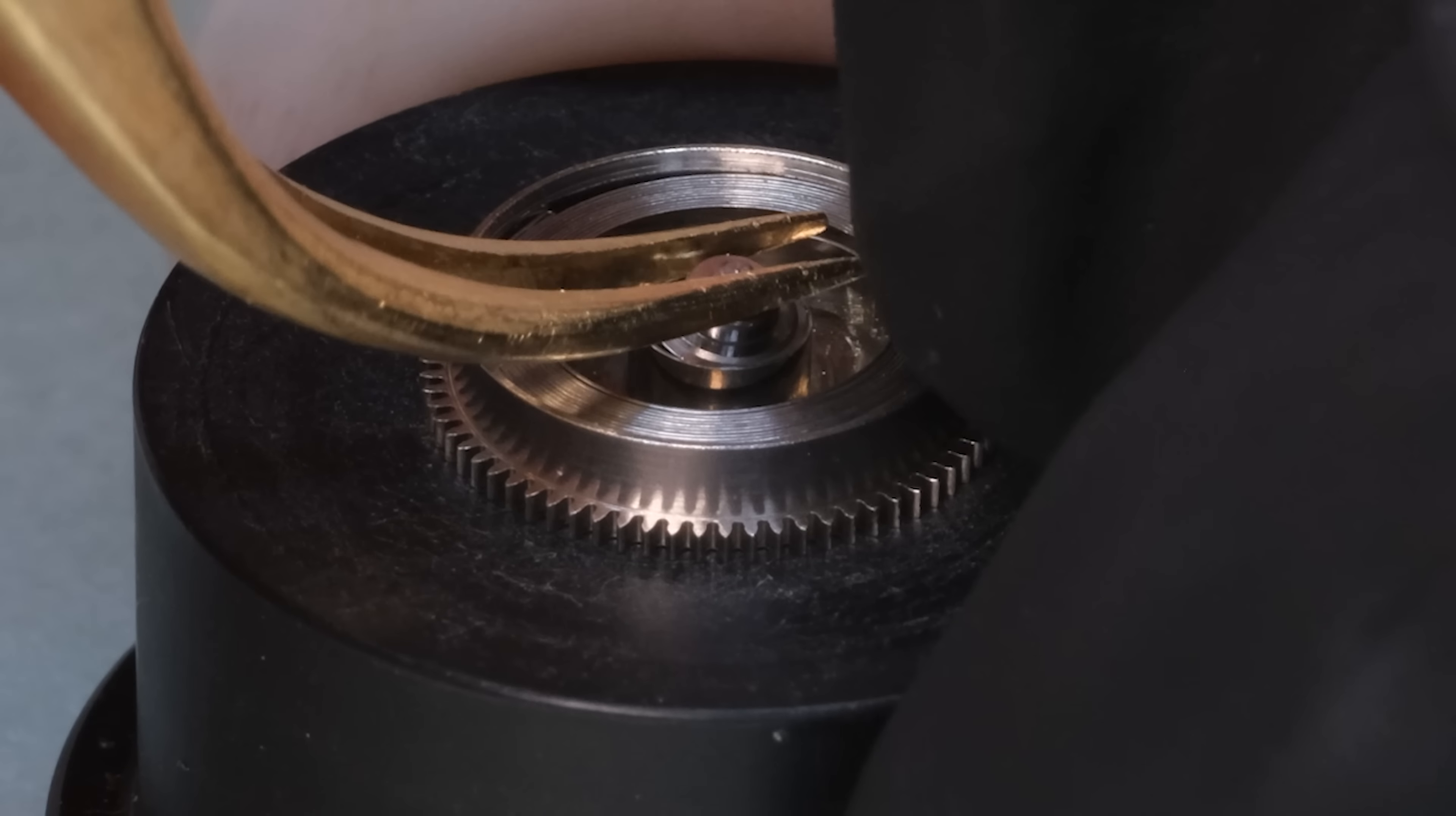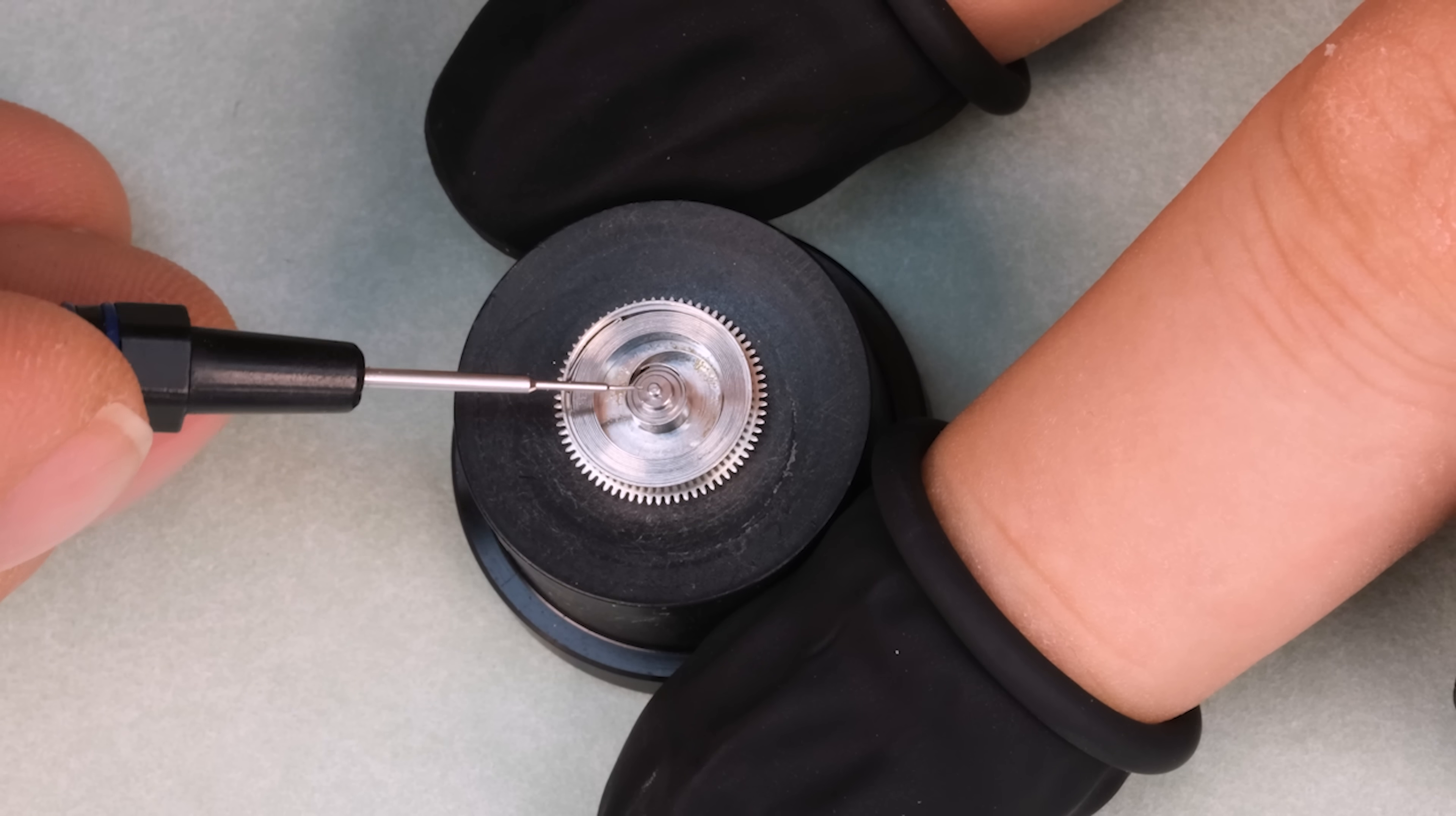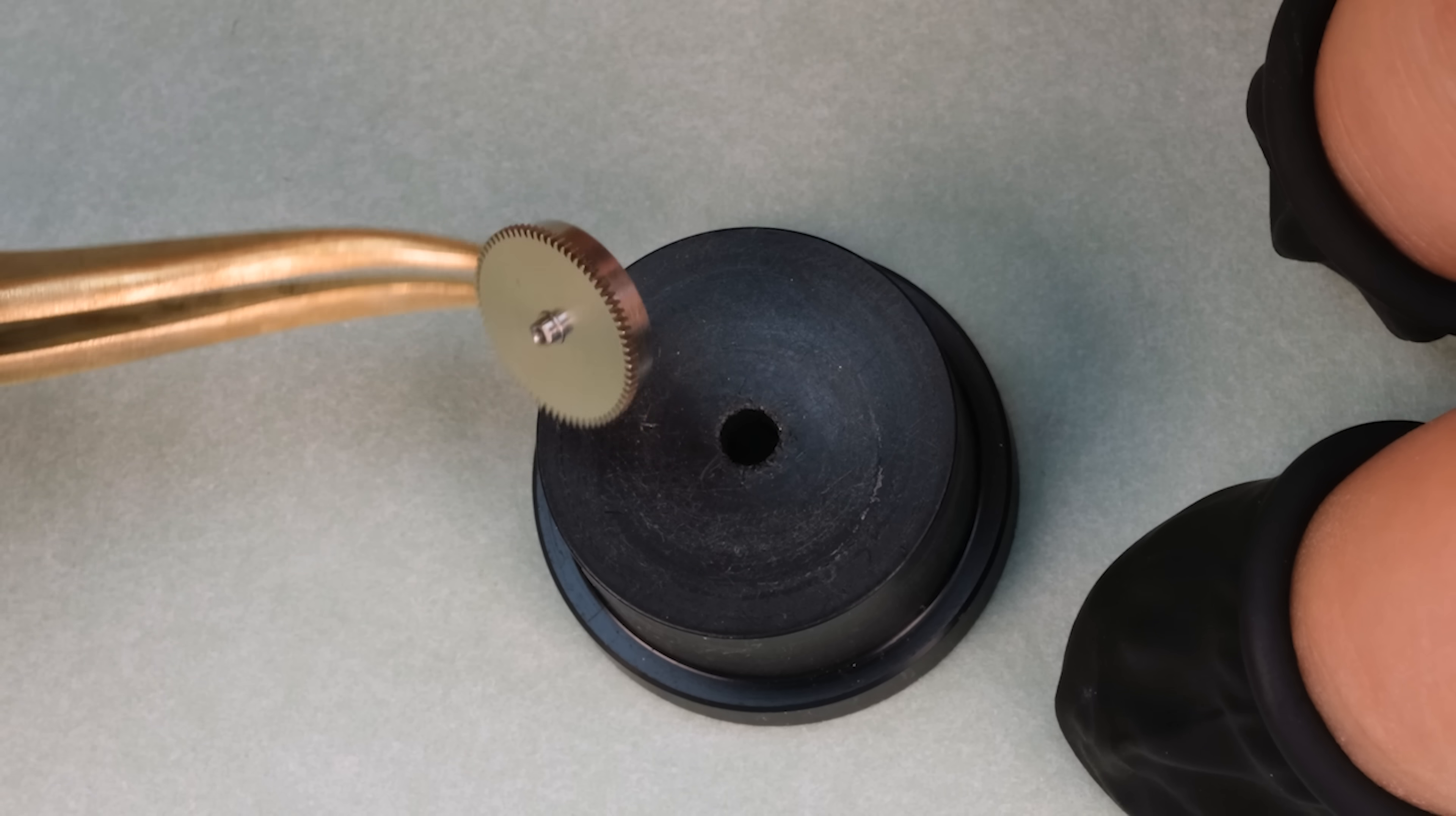In the center of the mainspring we put the barrel arbor. That one is connected to the crown through a series of wheels and pinions so that when we turn the crown, we also turn that barrel arbor and hence we wind the mainspring. I'll link to a video in the description that goes through the whole logic of watches in more detail if you're interested.